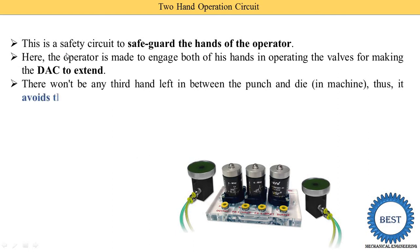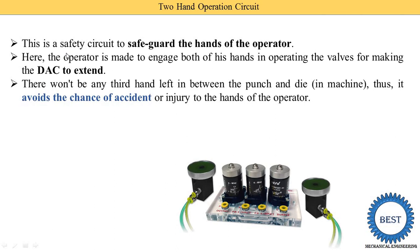There would not be any third hand left in between the punch and die in a machine, thus avoiding chances of accident or injury to the hands of the operators. Punch and die is generally used for sheet metal works for cutting and bending purposes. Punching operations require very high force, and if the operator's hand comes in between the punch and die, a very serious accident can occur. With the two-hand circuit, the operator has no free hand to put in between the machine components.